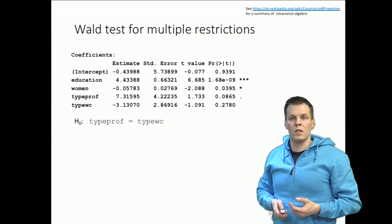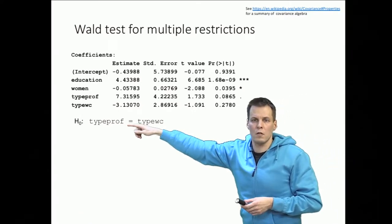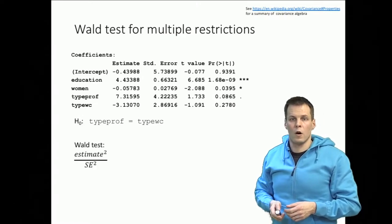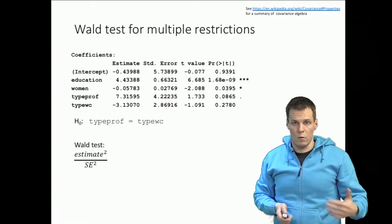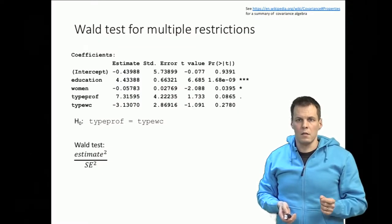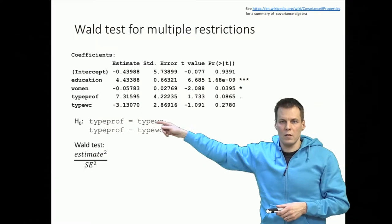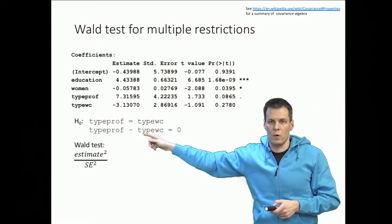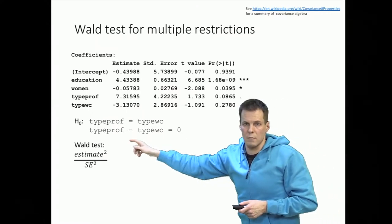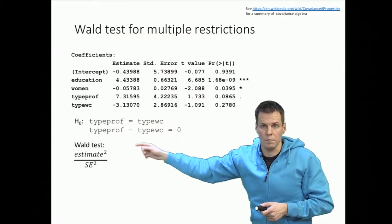To do that we use the Wald test. The null hypothesis here is that the type professional coefficient is the same as the type white collar coefficient. To calculate the Wald test we take the estimate squared and divide it by the standard error squared. We write the null hypothesis as: type professional minus type white collar equals zero. So we have something we compare against zero in the population — this is our estimate. We take the estimated difference of type professional minus type white collar and raise it to the second power.